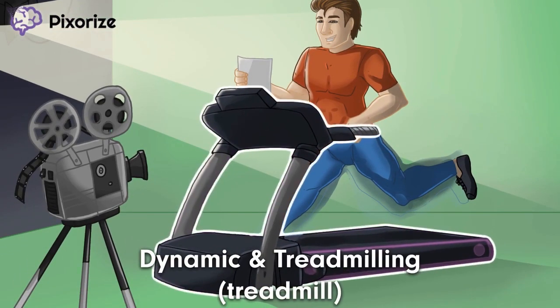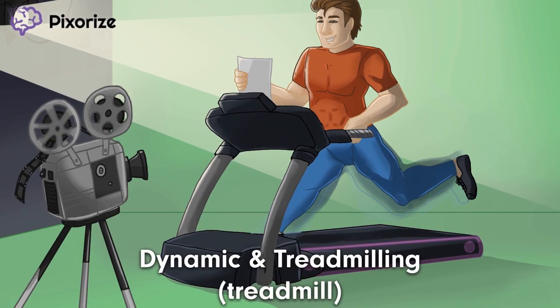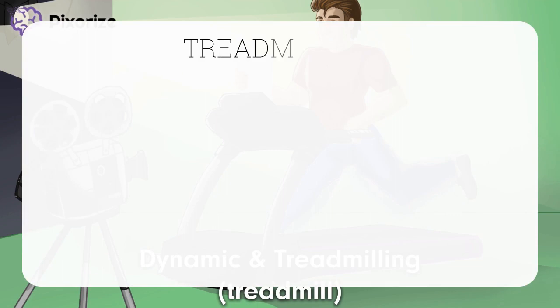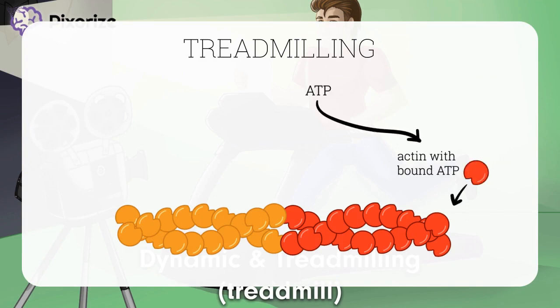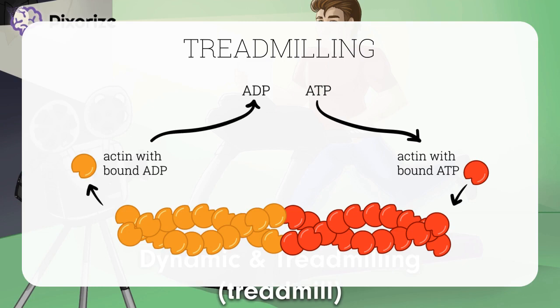Our actor is training on a treadmill, since these scenes always show the guy on a treadmill. The treadmill should help us remember that microfilaments are dynamic — they're able to rapidly grow and shrink by adding or taking away actin molecules from the ends of the filament. One property of dynamic filaments is a unique phenomenon known as treadmilling: when actin molecules are dynamically added on one side and taken away from the other, the overall length of the filament doesn't change, but the filament itself moves — resembling movement on a treadmill. This dynamism gives cells the ability to change their shape and even move around.